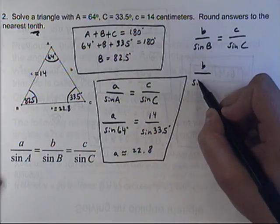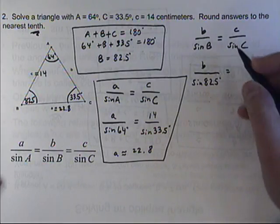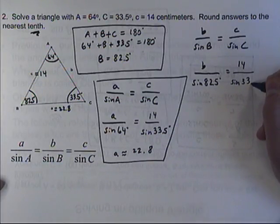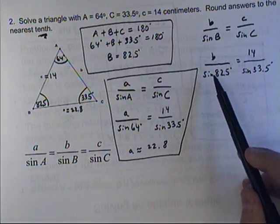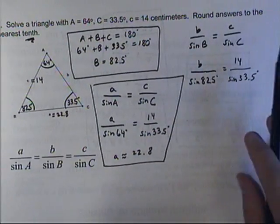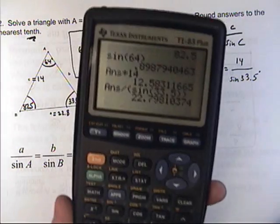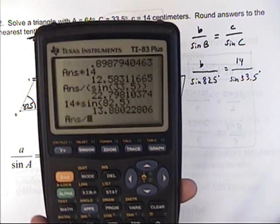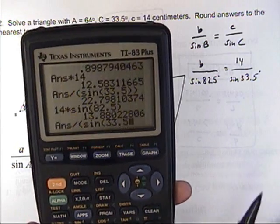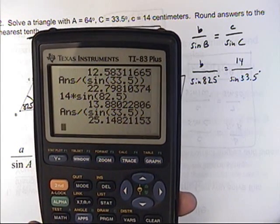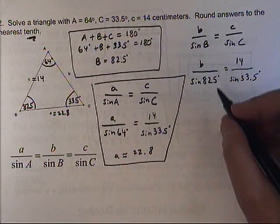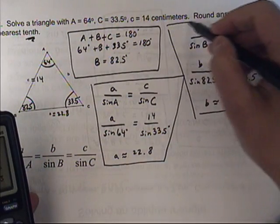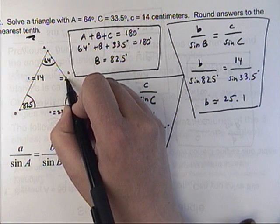So side B over the sine of 82.5 degrees equals 14 over the sine of 33.5 degrees. If I multiply both sides by the sine of 82.5 degrees, they cancel on one side, leaving 14 times the sine of 82.5 degrees divided by the sine of 33.5 degrees. I get 25.148, so to the nearest tenth that's 25.1 centimeters. So side B equals 25.1.